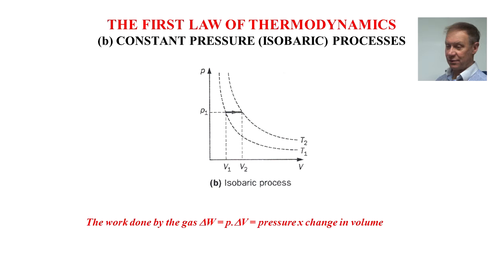Next one is constant pressure or isobaric process, in which work done by the gas W is P delta V, as we saw before. This is constant pressure times change in volume. The arrow goes at level P1 across the diagram, from V1 to V2.